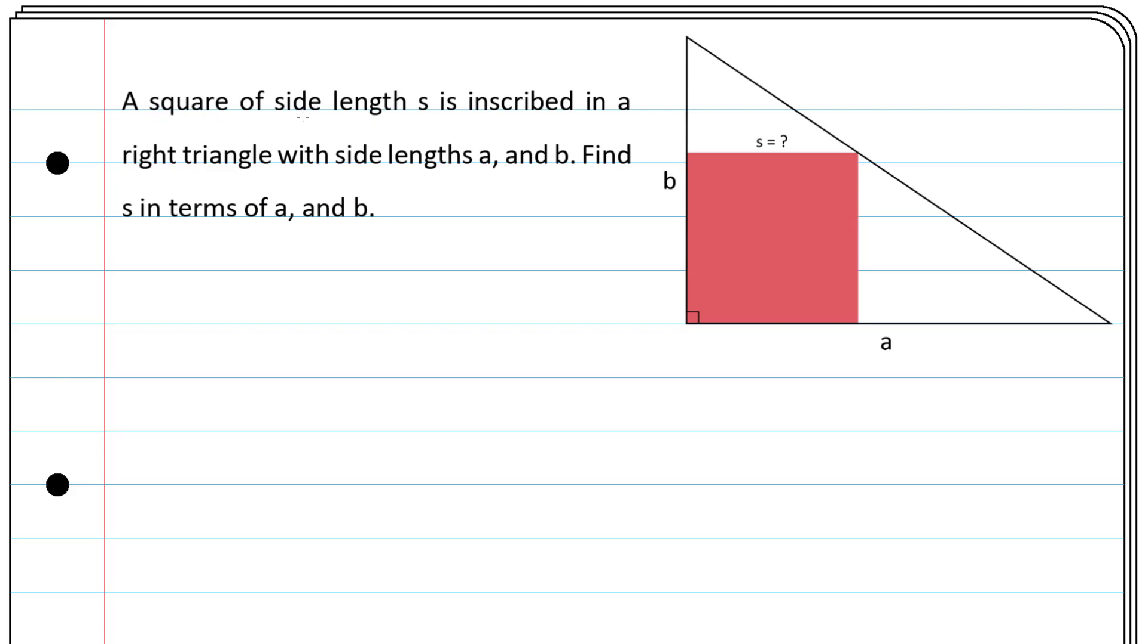A square of side length s is inscribed in a right triangle with side lengths a and b. Find s in terms of a and b. Pause the video and see if you can come up with a solution.